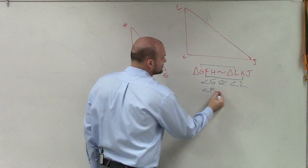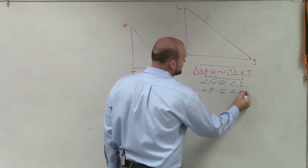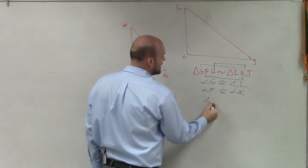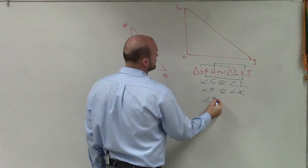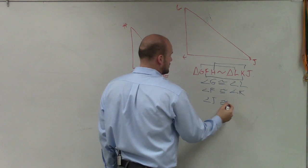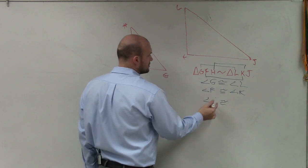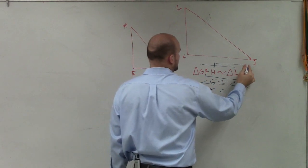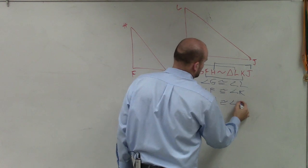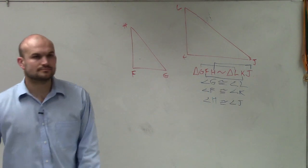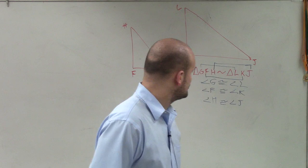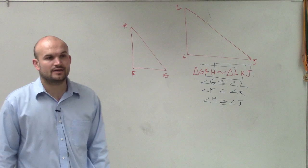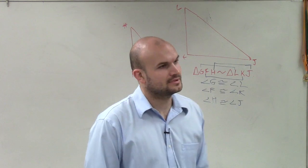So I can say angle G is congruent to angle L. Angle F is congruent to angle K. And angle H is congruent to angle J. Angle G is congruent to angle L, angle F is congruent to angle K, and angle H is congruent to angle J.